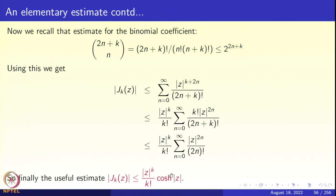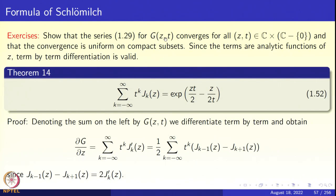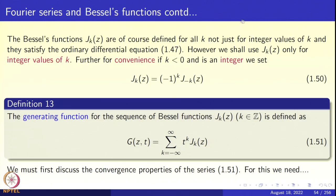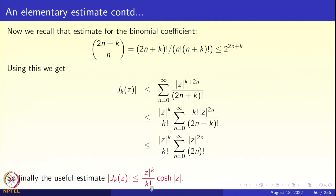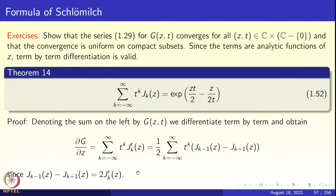We can use this coarse estimate to show that the series G(z,t) = summation K from minus infinity to infinity of t^K * J_K(z) converges uniformly on compact subsets of ℂ × (ℂ \ {0}), where Z varies over ℂ and T varies over ℂ \ {0}. That is left as an exercise for you.